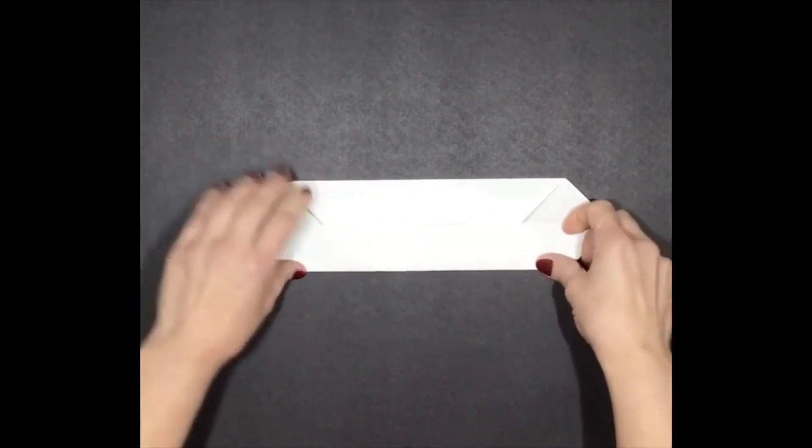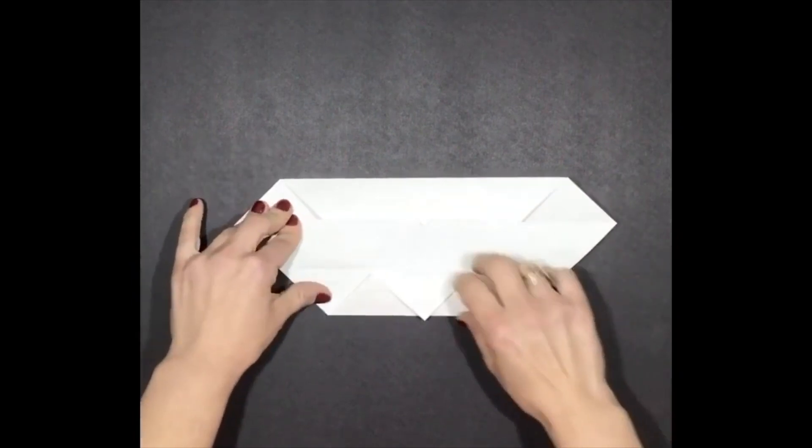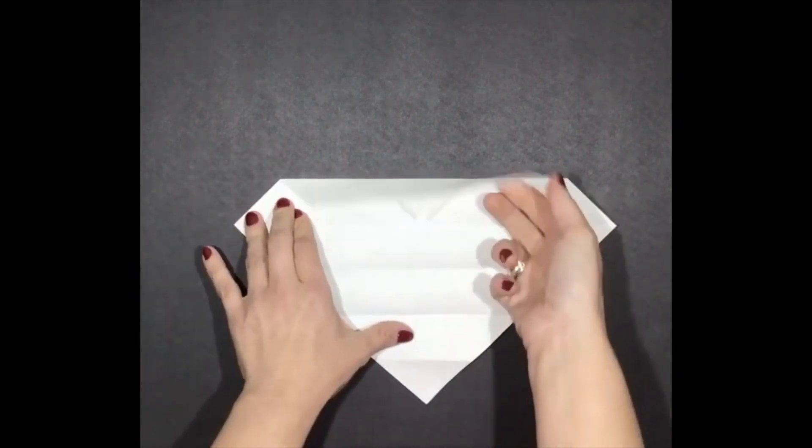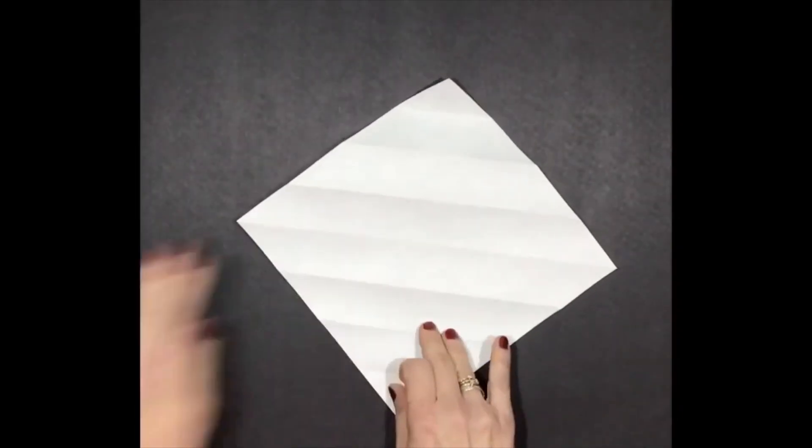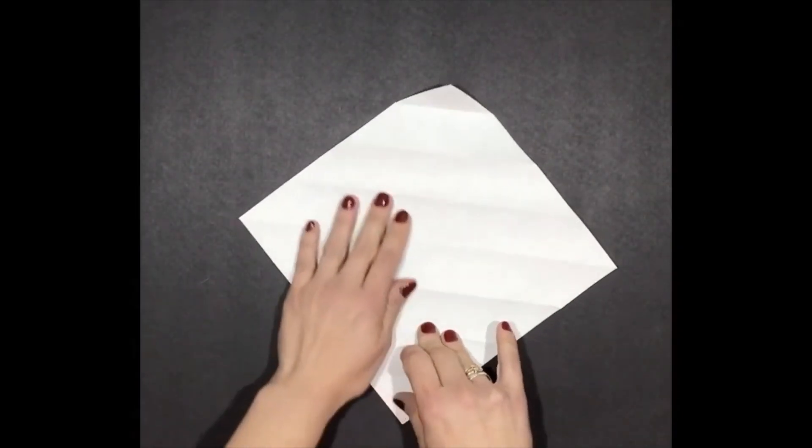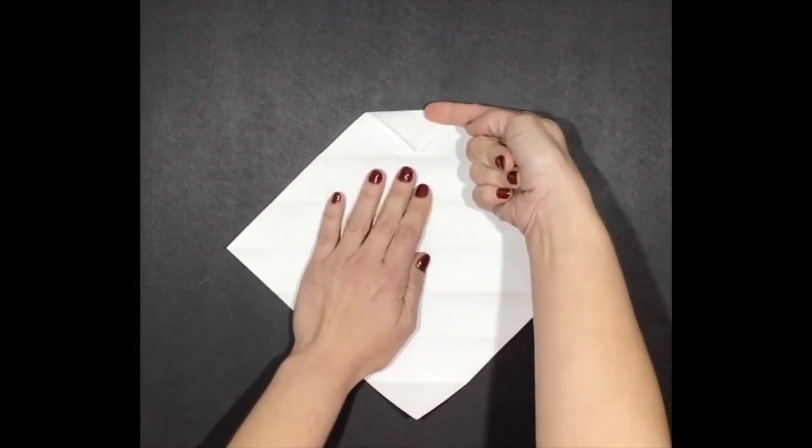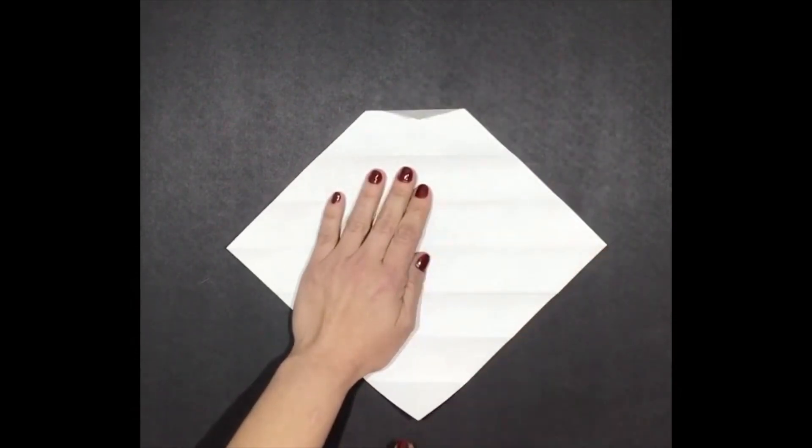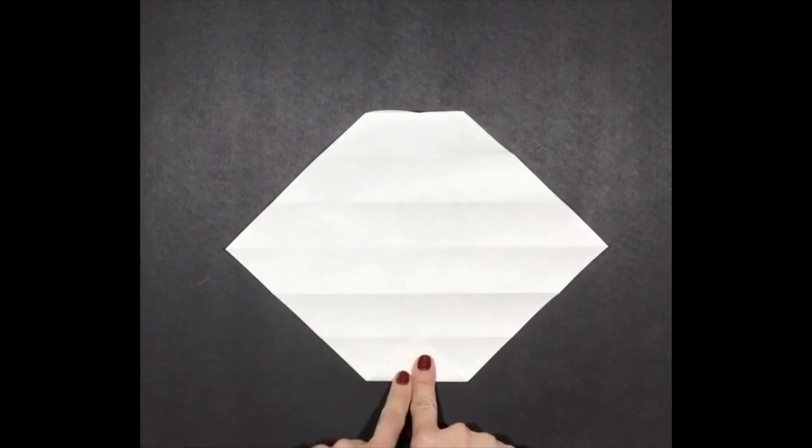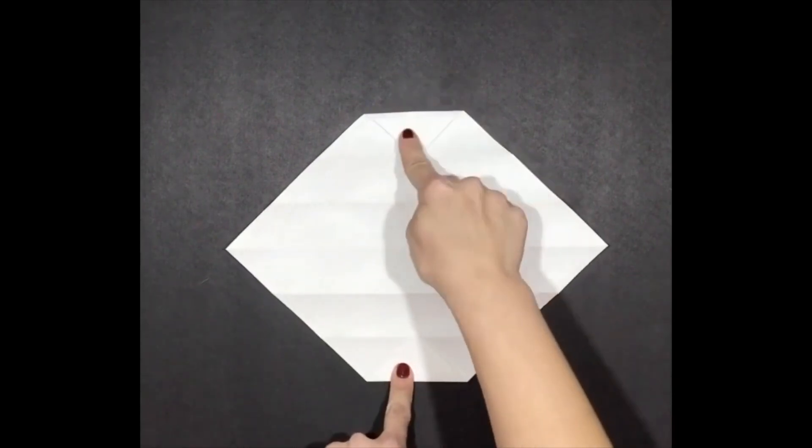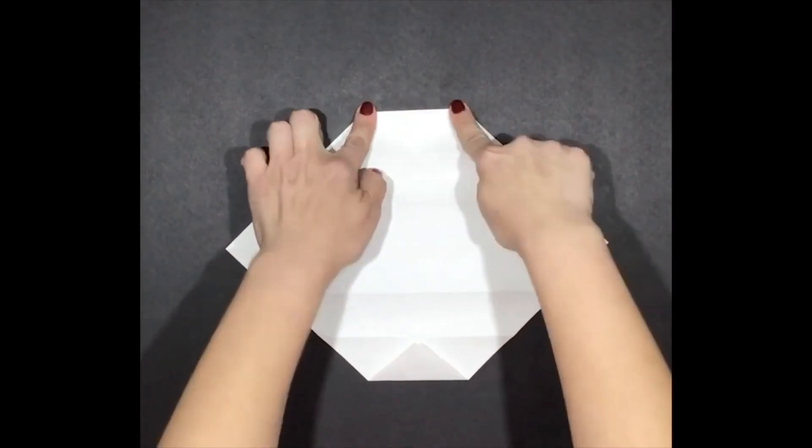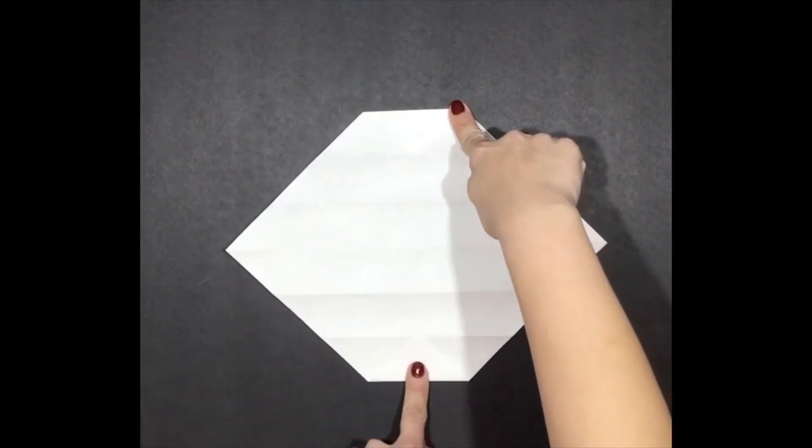Once you're finished doing that step, open the whole entire thing up. So you're going to open the whole paper up, and you're going to flip it over upside down. Once you flip it over upside down, these two pieces are naturally going to want to fold back down. And that's fine, because we want them to. So we want to push these two top and bottom pieces. Fold one top down and the bottom part.